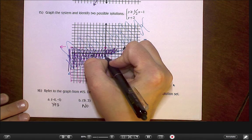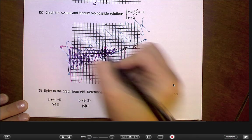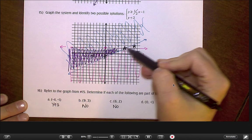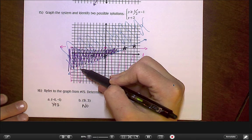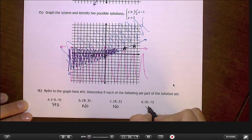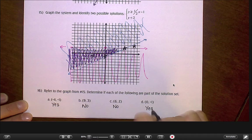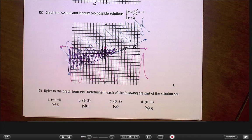But then when I look at 0 comma negative 1, that's my y-intercept right here. That is located in this shaded area on a solid line. And if it's on a solid line, then we can say yes. Okay, that's it for this page. I will carry on with another video with page three.